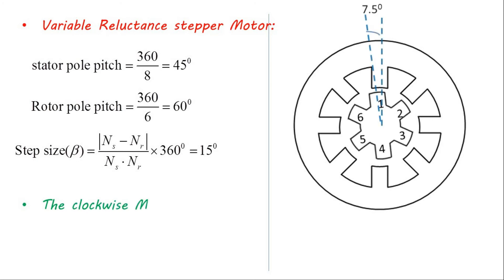The microstepping can also be obtained by turning on two phases simultaneously. The sequence will be phase A, then phase A and B, then phase B, then phase B and C and so on.